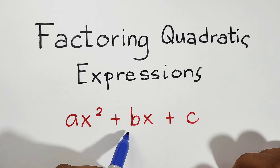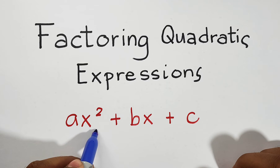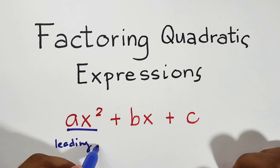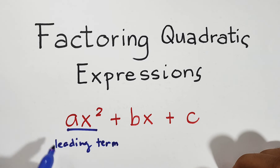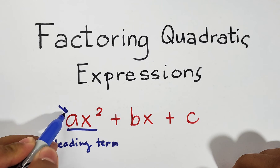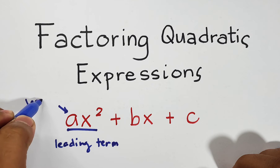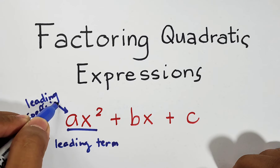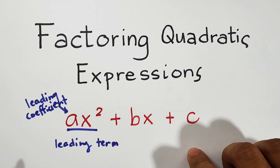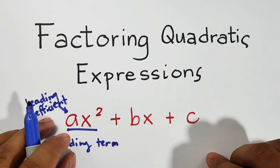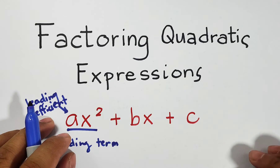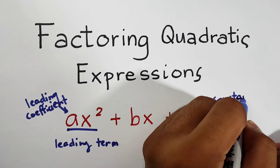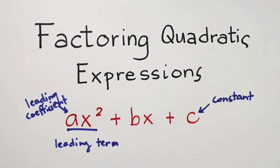We have here ax squared plus bx plus c. This ax squared is the leading term of the given quadratic expression. Since this one is the leading term, this variable a is the leading coefficient. Aside from having the leading term and the leading coefficient, we also have this number c, which is the constant. The constant will give you the idea of how we are going to factor out a given quadratic expression.